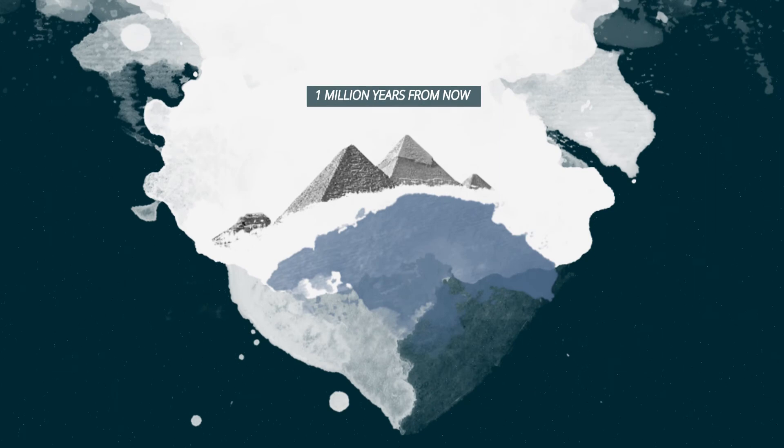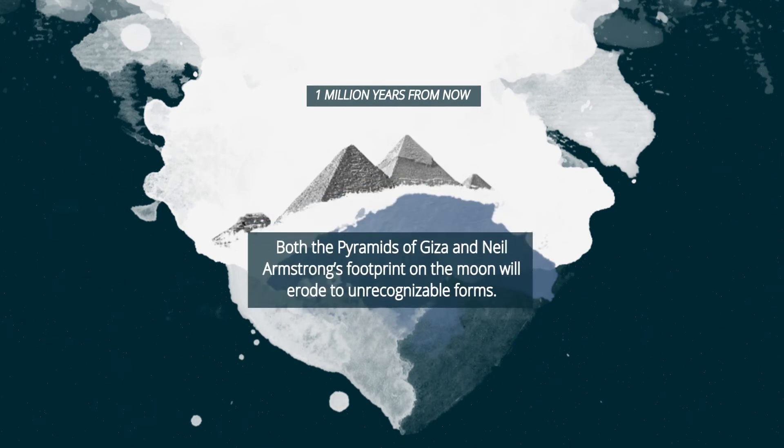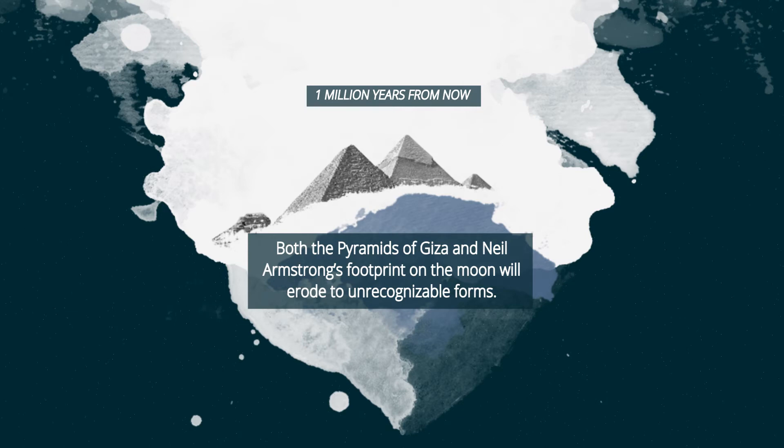One million years from now, both the Pyramids of Giza and Neil Armstrong's footprint on the Moon will erode to unrecognizable forms.